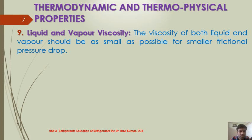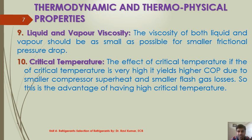The thermodynamic properties are actually interrelated and mainly depend on the normal boiling point, critical temperature, and molecular structure. The normal boiling point indicates the useful temperature level as it is directly related to the operating pressure. Regarding critical temperature: if the critical temperature is very high, it yields a higher COP due to smaller compressor superheat and smaller flash gas losses.